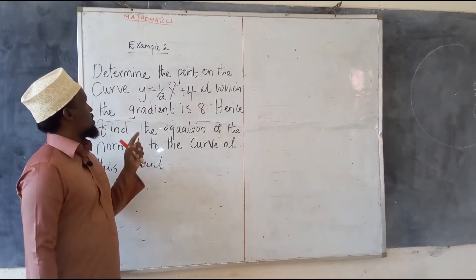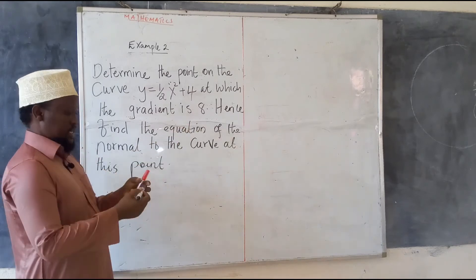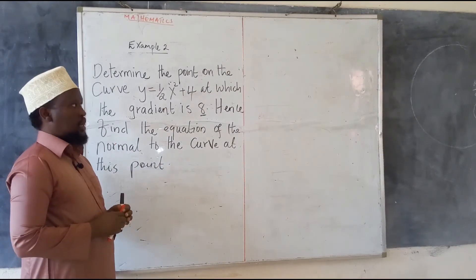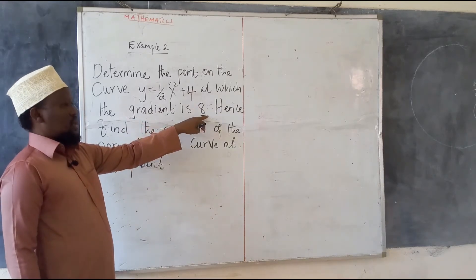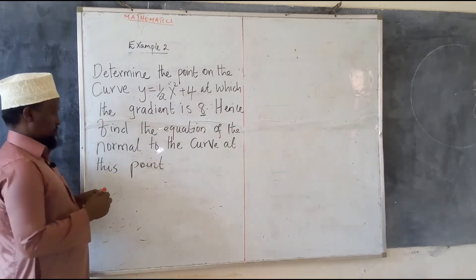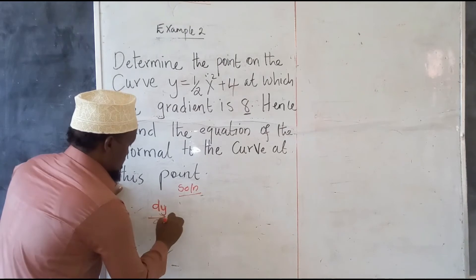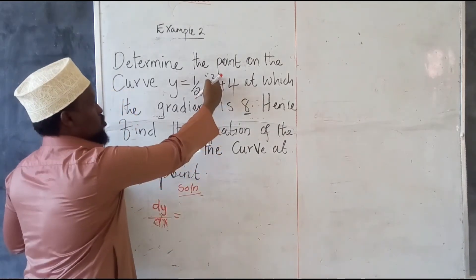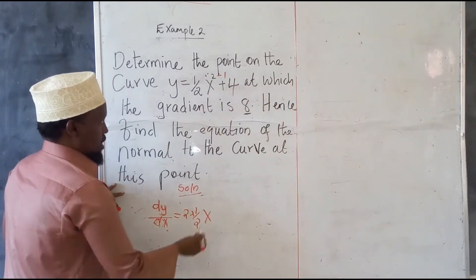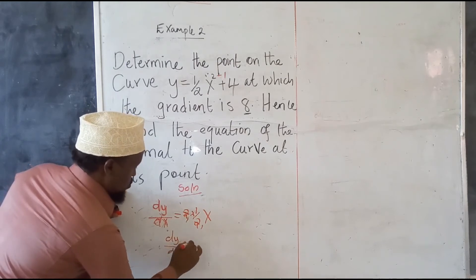Let us see another example. You are told to determine the point on the curve y equals one half x squared plus 4 at which the gradient is 8, and hence find the equation of the normal to the curve at this point. Since you are given the gradient, we differentiate first. dy/dx equals 2 times one half, giving x to the power 1, and the derivative of the constant is 0. So dy/dx equals x. Since the gradient is 8, we have 8 equals x, so x equals 8.